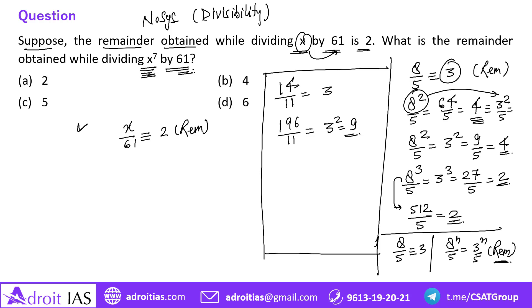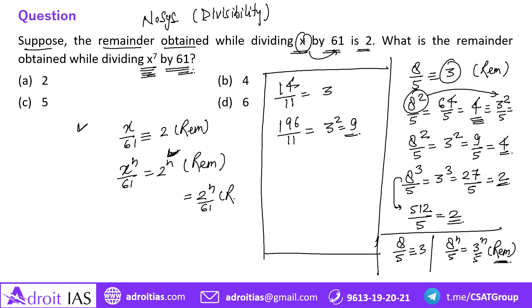Now let's come to our original question. x divided by 61 gives remainder 2, so x to the power n divided by 61 will give 2 to the power n as the remainder. If 2ⁿ is smaller than 61, that is the answer; if 2ⁿ is bigger than 61, we divide again by 61 and take the resulting remainder.